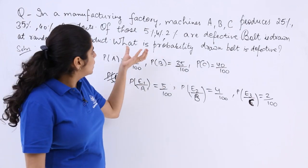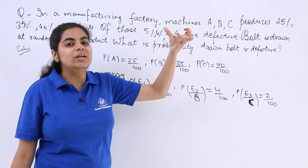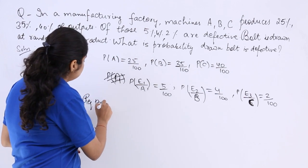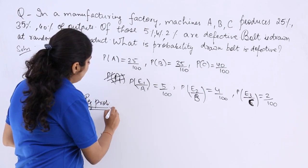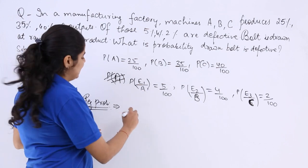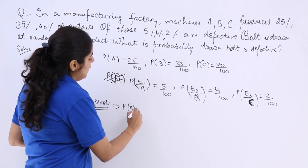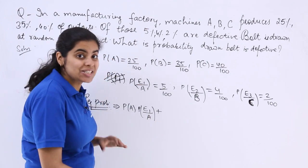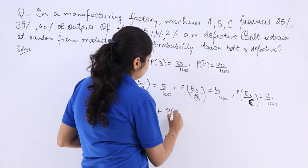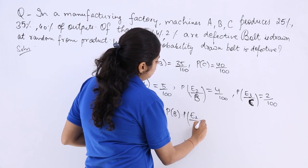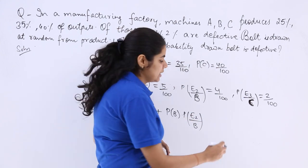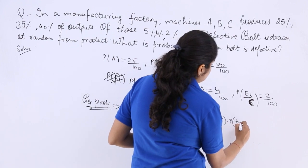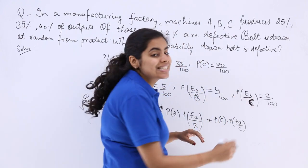Now, you have to find out the probability the drawn bolt is defective. So, required probability. Required probability is what? It is probability A multiplied by probability E1 with respect to A, plus probability B multiplied by probability E2 with respect to B, plus probability C multiplied by probability E3 with respect to C.